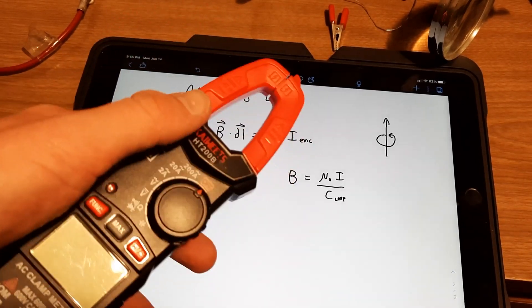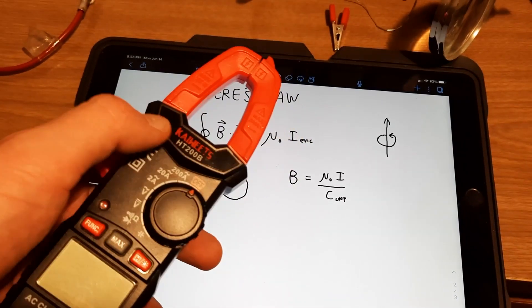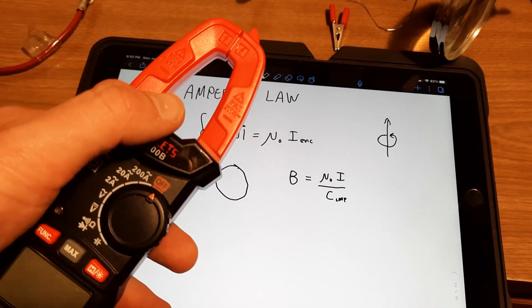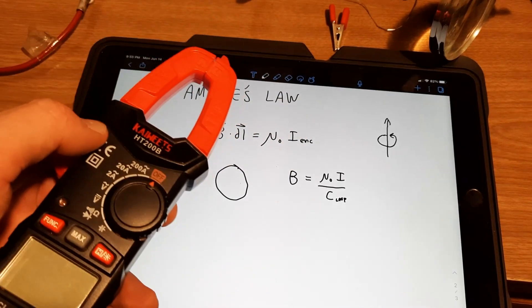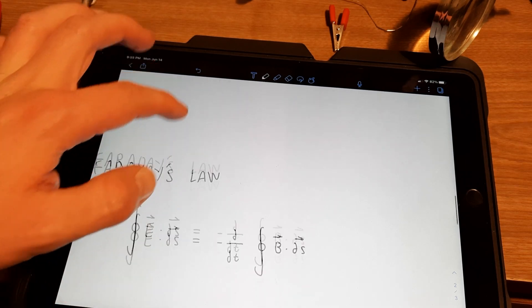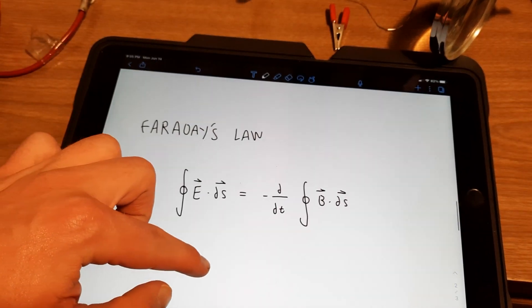Great! We just figured out how to calculate the magnetic field going through this loop, but how does that translate into trying to figure out how much AC current is going through here? Well that comes down to another great law called Faraday's law.